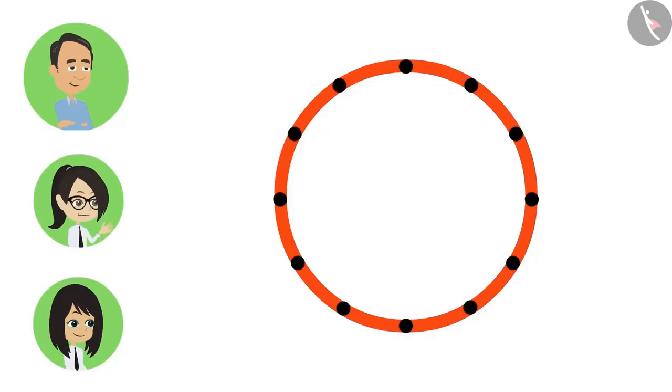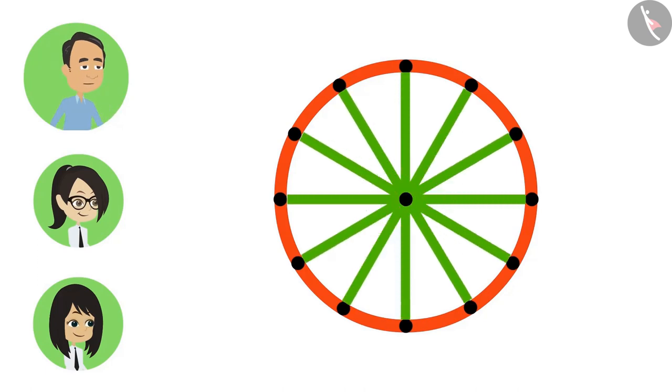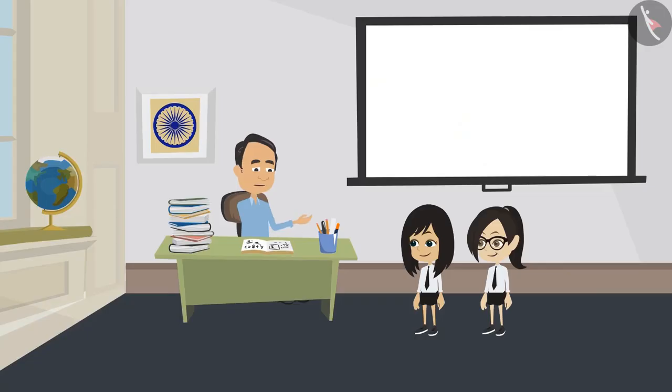circle? There can be many. Absolutely right. And lines can be drawn from the center to all those points. Now tell me, what will all these lines be called? Sir, we will call it a radius only. Absolutely correct. Like this, there can be several radii in one circle